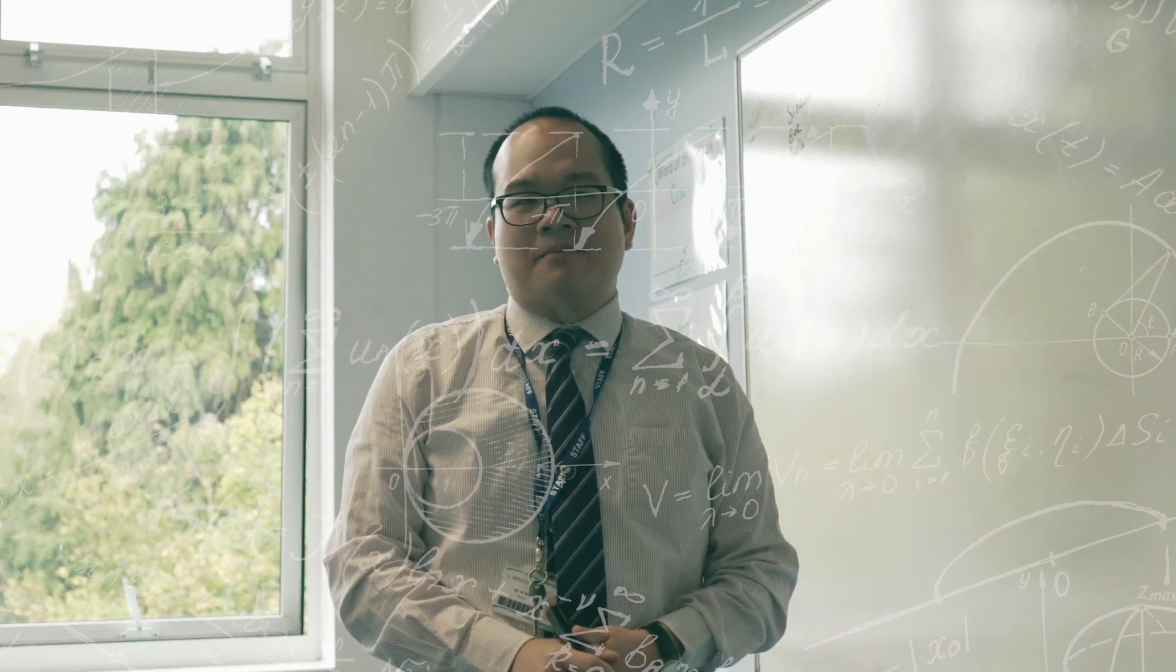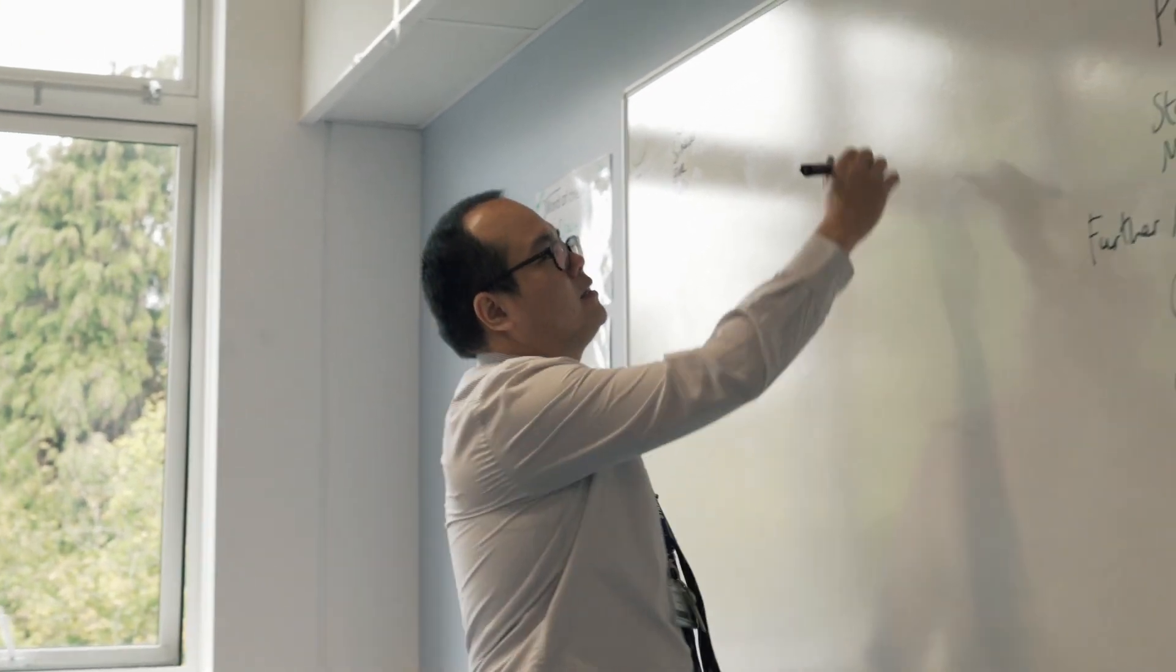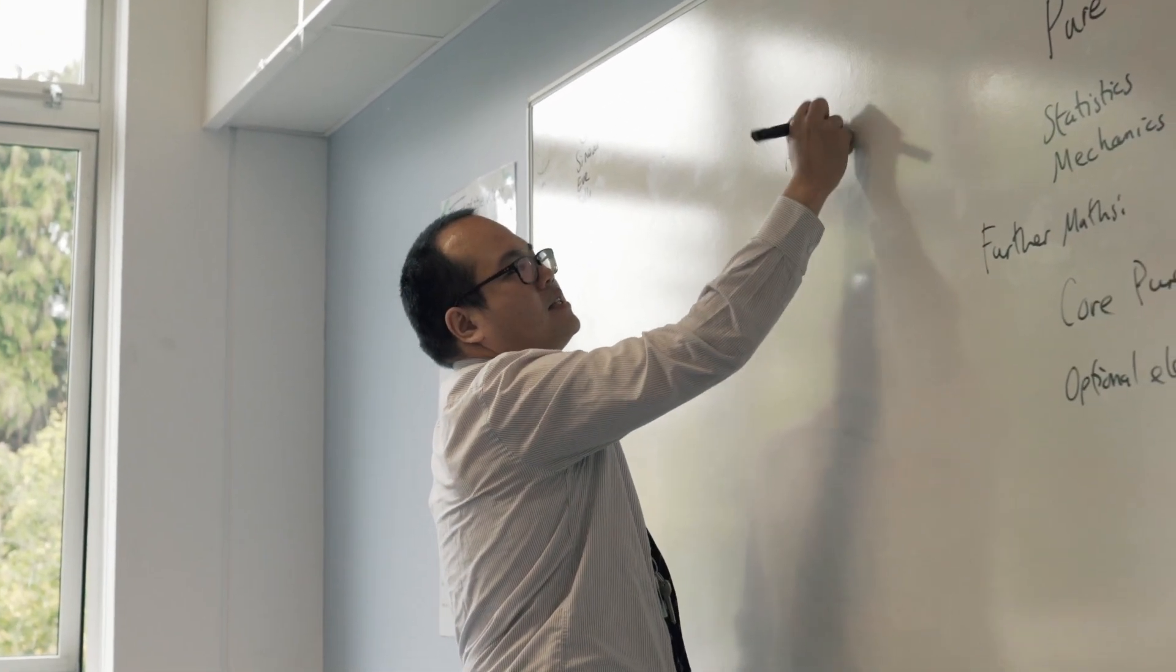So with the A-Level Maths qualification, unlike the GCSE series graded at GCSE grades 1 to 9, the A-Level exam is graded at A-star to E.